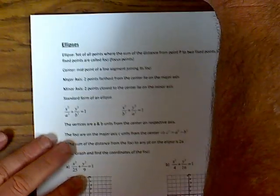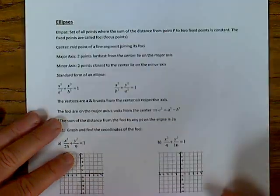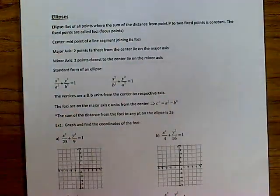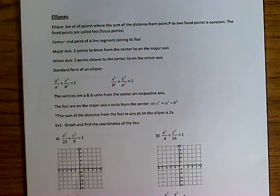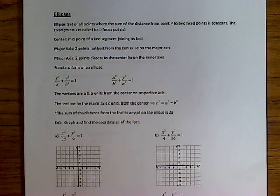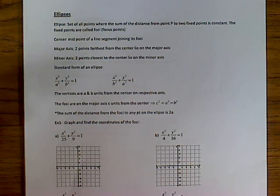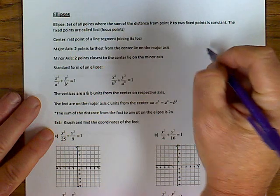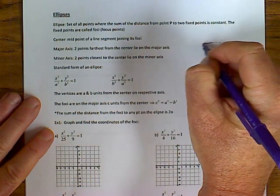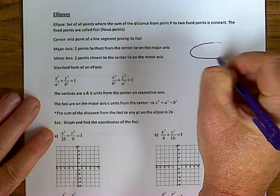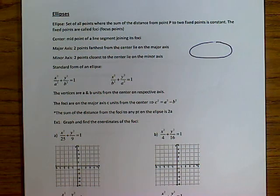Alright guys, today we learn a new shape called the ellipse. The way I think of an ellipse is that it is an oval — well, not exactly an oval, but like an oval, almost like a circle that's been stepped on. So what you're going to have is some sort of oval-type shape.